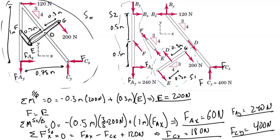This is an example of how we can use equilibrium analysis of parts of a frame to solve for more than three unknowns.